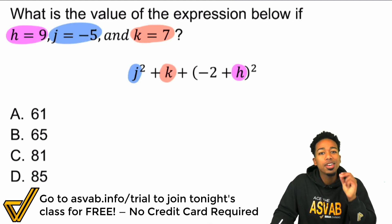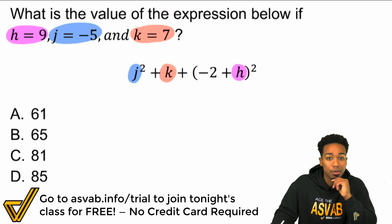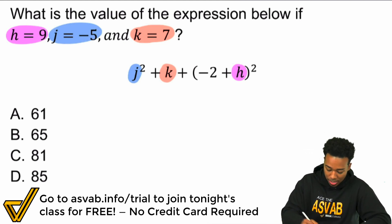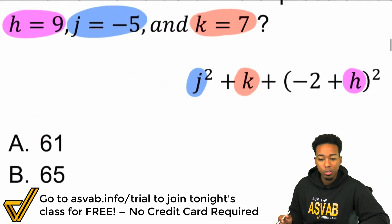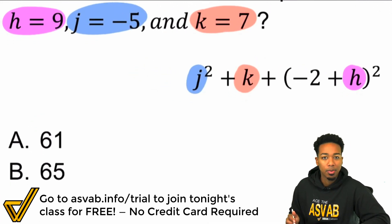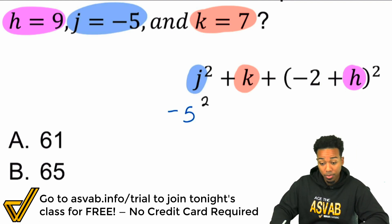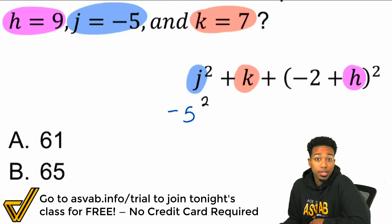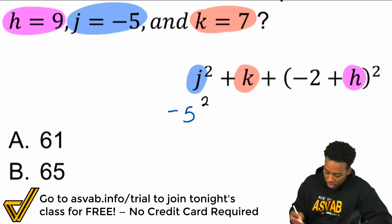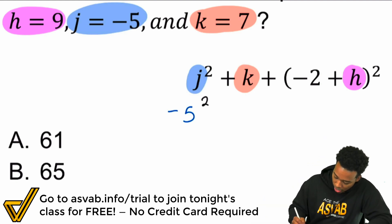But let me show you the biggest mistake that everyone makes. The biggest mistake is when handling these negative numbers. Here we have j equals negative 5. So let me zoom in just a little bit here. I'm going to show you the biggest mistake that people make. The biggest mistake is this. They think that, okay, j equals negative 5. If I plug this in, this is going to be negative 5 squared. Does that look like a mistake to you? It is. It is a mistake. And here's why.